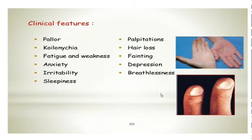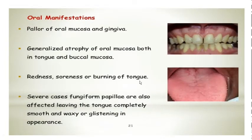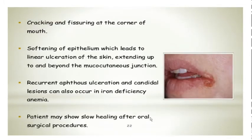Clinical features as we talked about: they can be pallor, koilonychia, fatigue and weakness, anxiety, irritability, sleepiness, cognitive dysfunction because of the decrease in oxygen carrying capacity of the blood. There can be palpitations, hair loss, feeling of depression, and breathlessness. Oral manifestation is very common — pallor of the oral mucosa and gingiva, generalized atrophy of the oral mucosa, redness and soreness and burning of the tongue. The fungiform papillae are also affected, leaving the tongue completely smooth and waxy and glistening in appearance. Cracking and fissuring at the corner of the mouth is also very common, and recurrent apthous ulceration and candidal lesions can also occur in iron deficiency anemia.